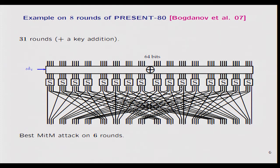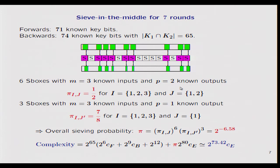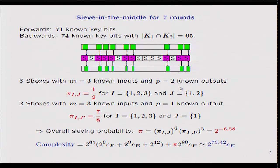We provide a sieve-in-the-middle algorithm on seven rounds. In the forward direction, we consider three rounds and examine all possible key bits except nine, because the key size is 80 bits. In the backward direction, we also consider three rounds and examine all key bits except six of them. The middle round — the function used for sieving, the S-function — corresponds to the nonlinear layer in PRESENT, consisting of 16 copies of the same four-bit S-box.